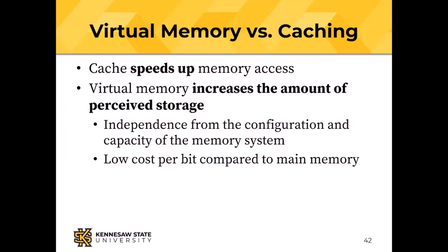Virtual memory versus caching: caching speeds up memory access. Virtual memory increases the amount of perceived storage, giving us at least some independence from the configuration of memory. I can run programs bigger than the physical memory as long as I don't need all of that memory at one instant, and I get a smaller cost per bit compared to providing the equivalent size in real main memory.